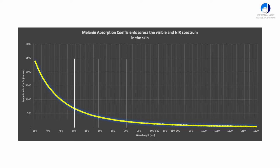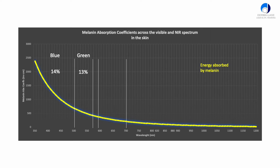How does this manifest itself in melanin? This is the melanin absorption curve from 350 to 1200 nanometers. We can see that at the low end — 350 to 400 nanometers — absorption is pretty high, whereas out in the near-infrared around 1200 nanometers, absorption is very low. This has an effect on the temperatures that are going to be created. Blue is about 14% of all the light, green is about 13%, yellow only 4%, red is 17%, and infrared is more than half of the total energy.